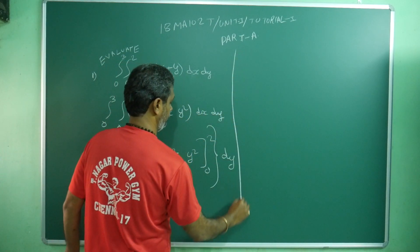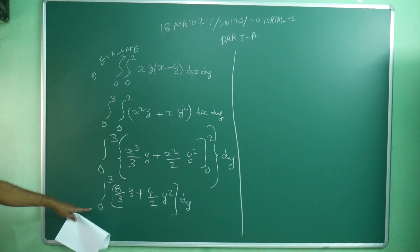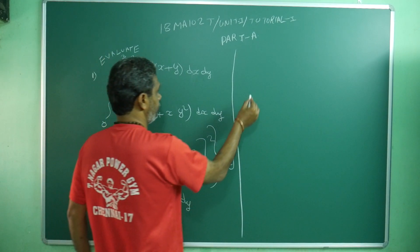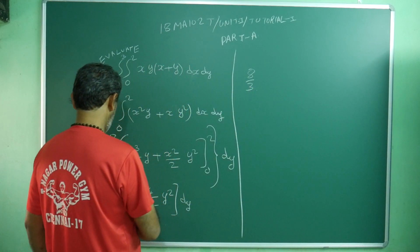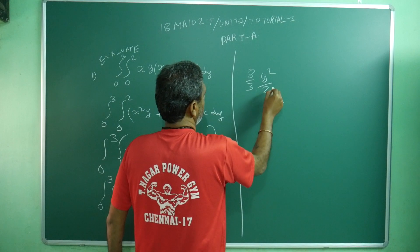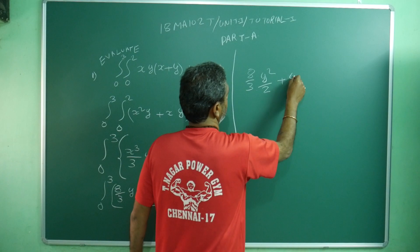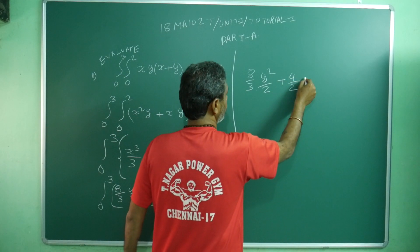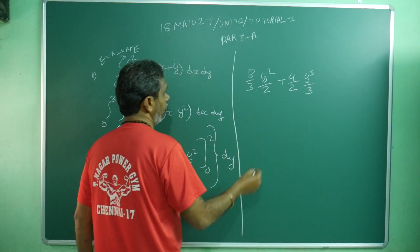Now x limit is over and the next integral running is 0 to 3, do with respect to y. 8 by 3, if you integrate with respect to y, means what? y squared by 2 plus 4 by 2 y cubed by 3.